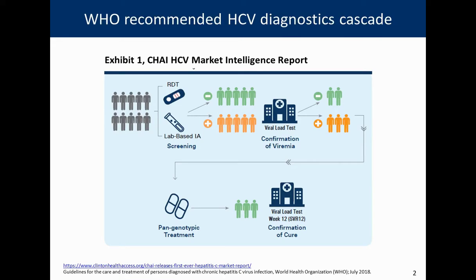Before diving into DBS, it's helpful to frame the discussion by walking through the testing cascade employed in many LMICs — also exhibit one of CHAI's recent HCV market intelligence report. Testing begins with individuals having either a rapid diagnostic test (RDT) or a lab-based immunoassay detecting HCV antibodies. Those who test positive are referred for reflex testing with a blood draw sent to a centralized facility for a viral load test. Those positive for viral load are put on genotypic treatment, and 12 weeks following treatment, they have another blood draw for viral load to assess sustained viral response at week 12 (SVR-12).